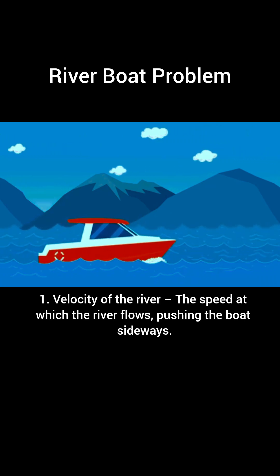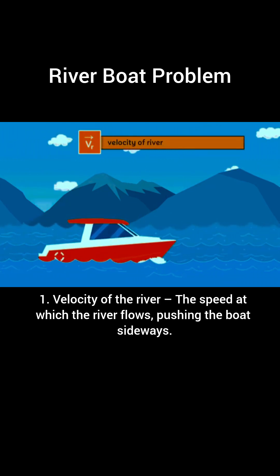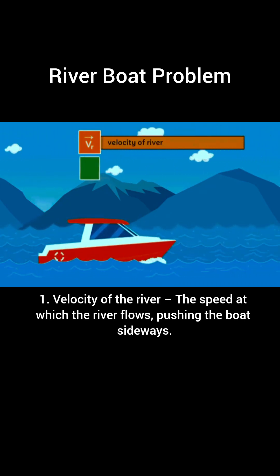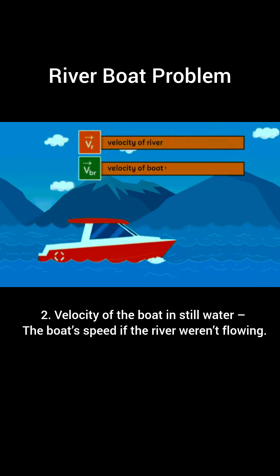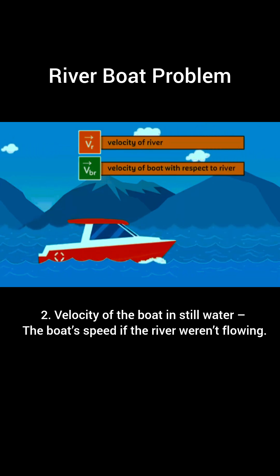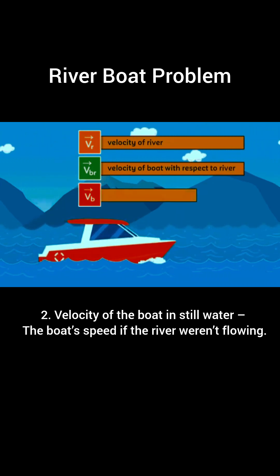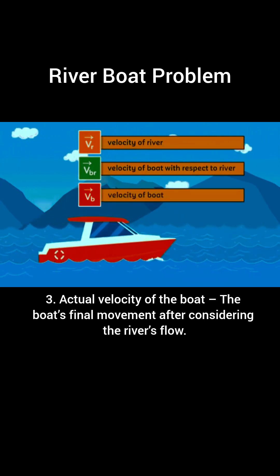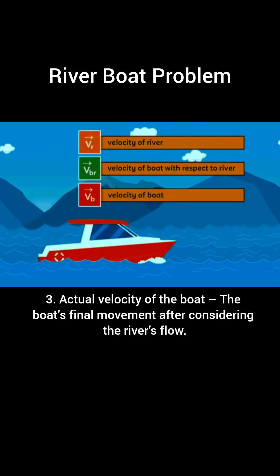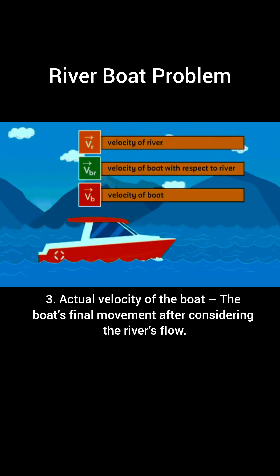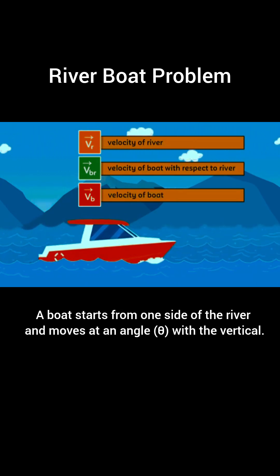One: velocity of the river — the speed at which the river flows, pushing the boat sideways. Two: velocity of the boat in still water — the boat's speed if the river weren't flowing. Three: actual velocity of the boat — the boat's final movement after considering the river's flow.